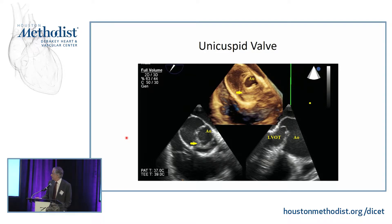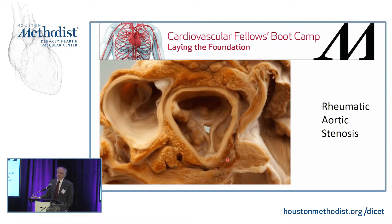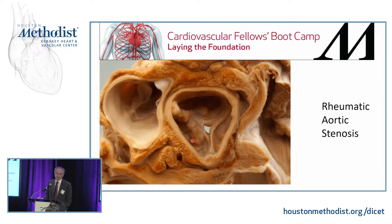Unicuspid aortic valves are very rare, but we do see them — one raphae and a single orifice. Rheumatic disease also can affect the aortic valve. Unlike mitral rheumatic disease, the pathology proceeds from the commissures inward, leaving a triangular-shaped orifice. Echocardiographically, there's enough calcium laid down that it's difficult to distinguish from plain calcific aortic disease, and we usually rely on the history of rheumatic fever or involvement of other valves.